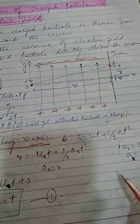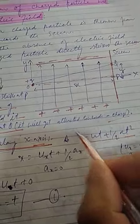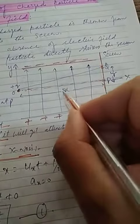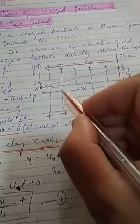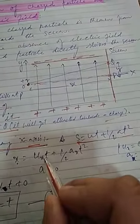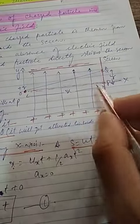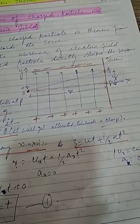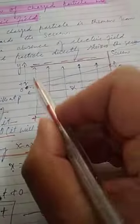As we know, s = ut + ½at². For motion along the x-axis, the distance s is equal to x. The velocity given to the particle along the x-axis is uₓ, which is constant. The acceleration along the x-axis is represented by aₓ.